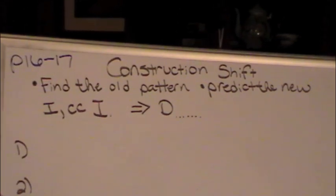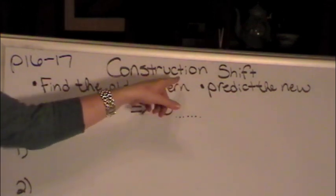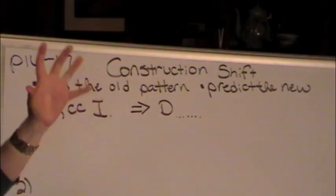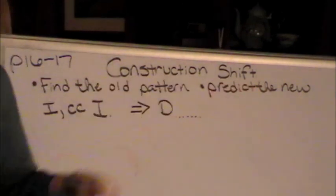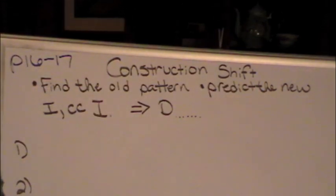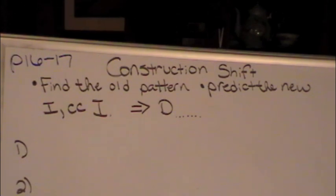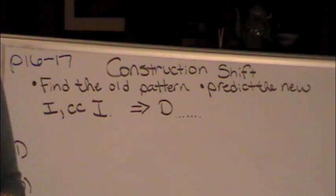So basically, I always say, find the old pattern first for the old sentence. Then, let's predict the new pattern because that will tell us how we need to punctuate it. Do we need a comma? Do we need a coordinated conjunction? Let's go ahead and let's see how we do this.